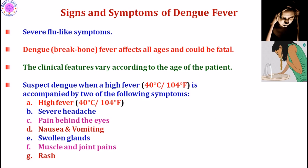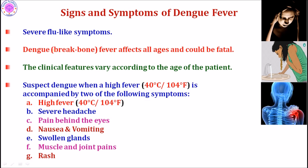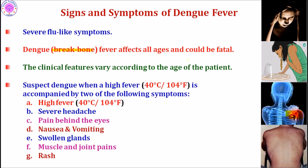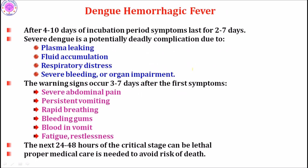Suspect dengue fever when there is sudden onset of high fever of 40 degrees centigrade or more, severe headache, pain behind the eyes, nausea and vomiting, swollen glands, and severe muscle and joint pains. This disease is also known as break bone fever because of the intense muscle and joint pains. A rash — small red patches — appears all over the body.